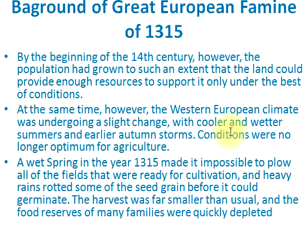The wet spring of 1315 made it impossible to plow all the fields that were ready for cultivation, and heavy rains rotted some of the seed grain before it could germinate. The harvest was far smaller than usual, and the food reserves of many families were quickly depleted.